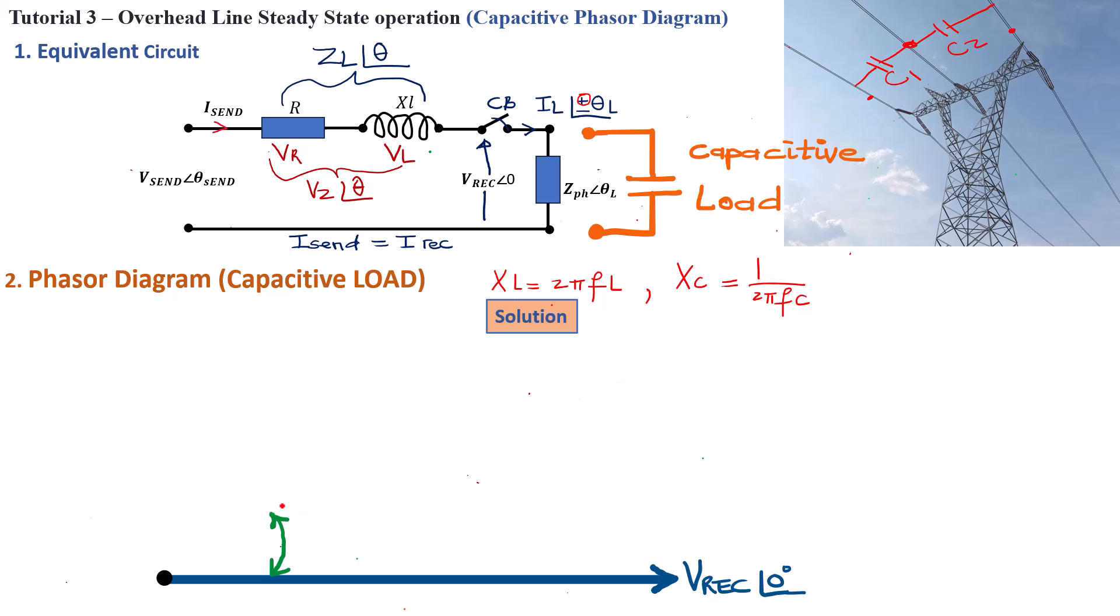We can calculate it if we've got the values. Now that we know where the location of that angle is, we can then calculate the magnitude of our current, of the load current. Then we can go ahead and draw the load current phasor. Now we've got the load current phasor, which is leading by θL the reference voltage V-rec.